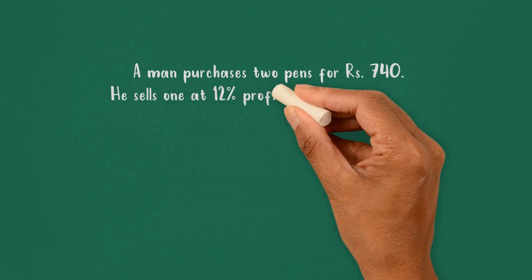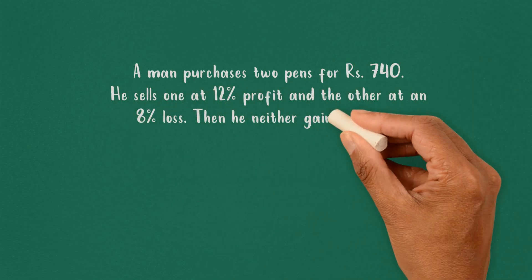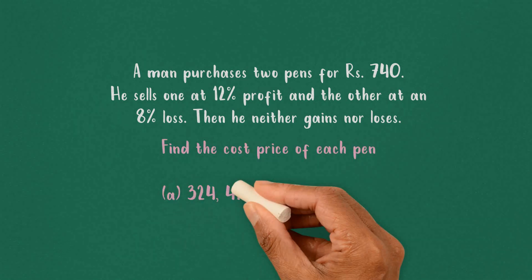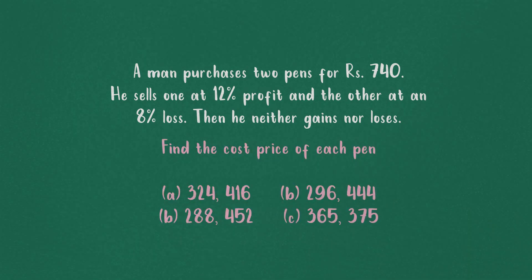A man purchases two pens for rupees 740. He sells one at 12% profit and the other at an 8% loss. Then he neither gains nor loses. Find the cost price of each pen from the given options.